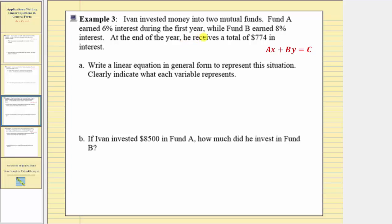Ivan invested money into two mutual funds. Fund A earned six percent interest during the first year, while fund B earned eight percent interest. At the end of the year he received a total of $774 in interest. We're asked to write a linear equation in general form to represent this situation, and clearly indicate what each variable represents. Notice how in this situation we have two unknowns: we don't know how much money is in fund A, which earned six percent, and we also don't know how much money is in fund B, which earned eight percent.